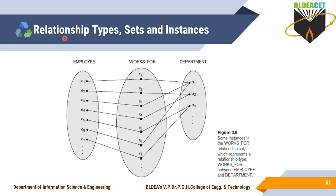We will start with relationship types. Here I have taken two entity types as examples: Employee is one entity type and Department is another. Entity type is the set of entities which share common attributes — that group we call an entity type. So here E1, E2, and all these are the entities, and they share the same attributes.